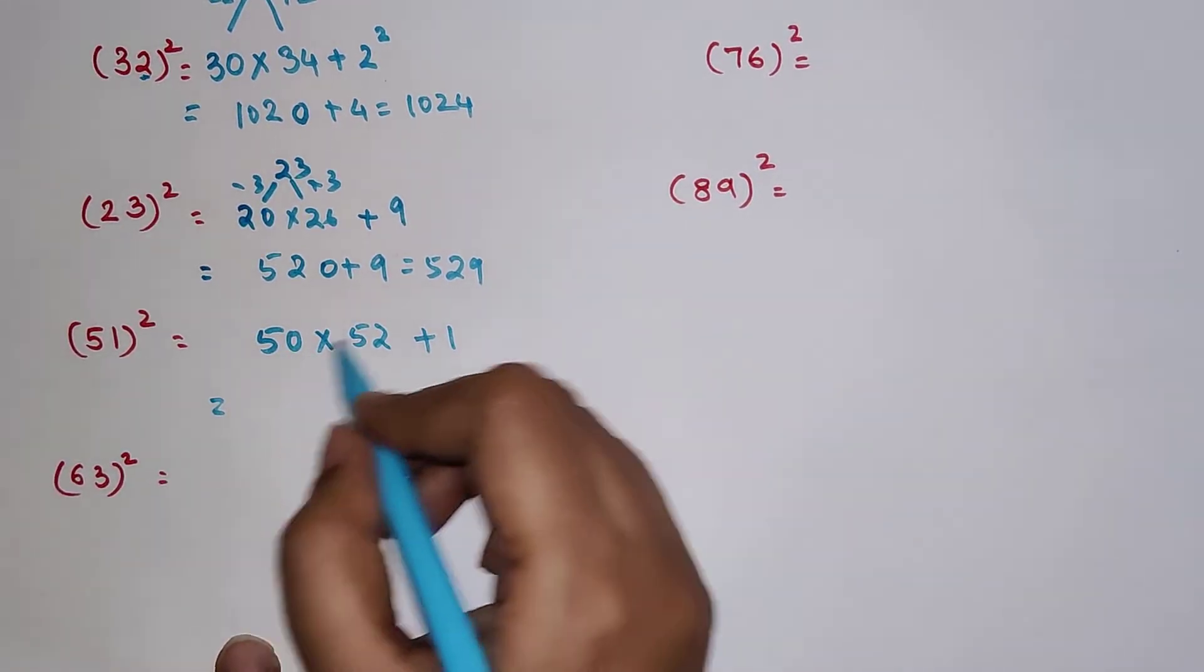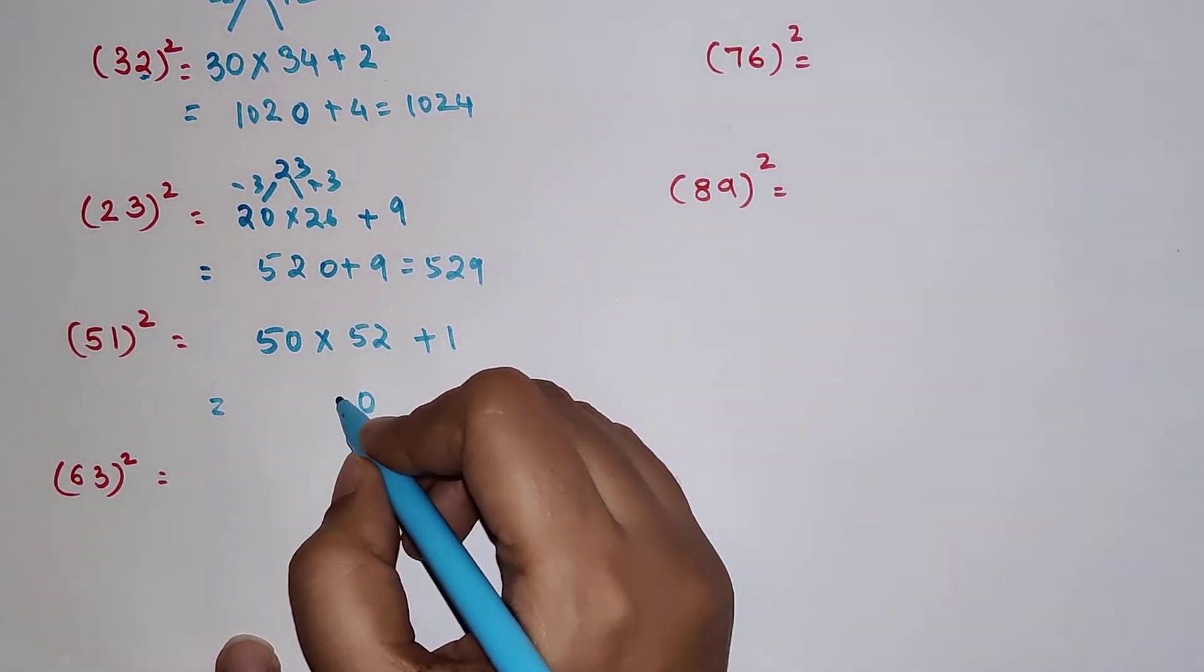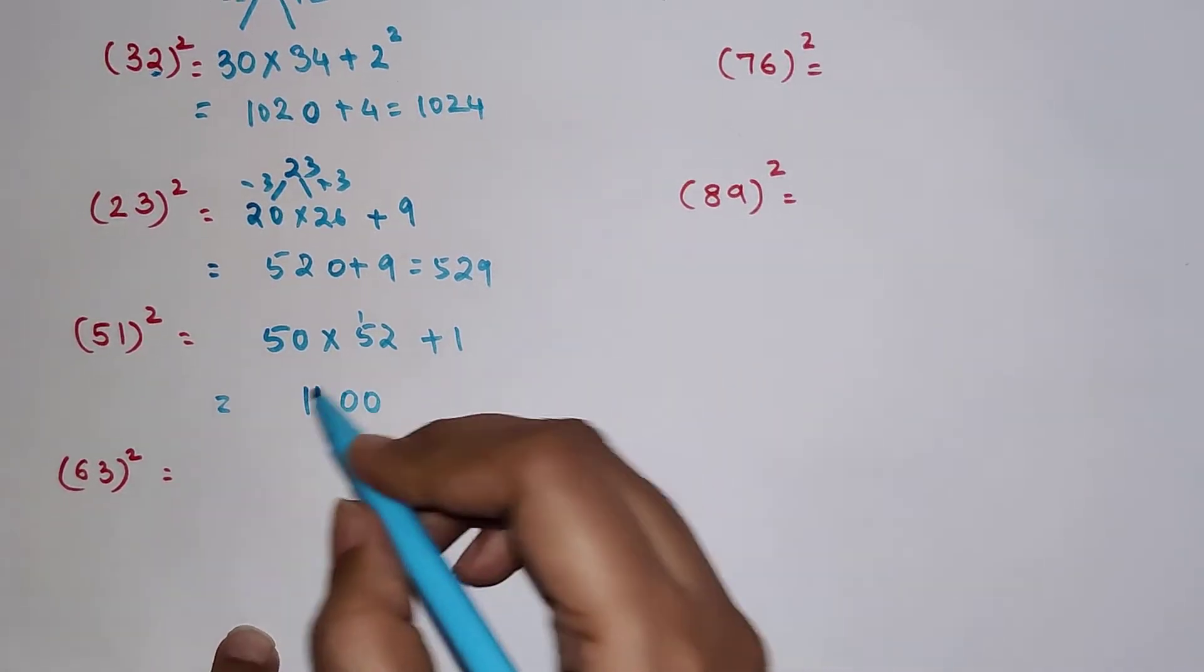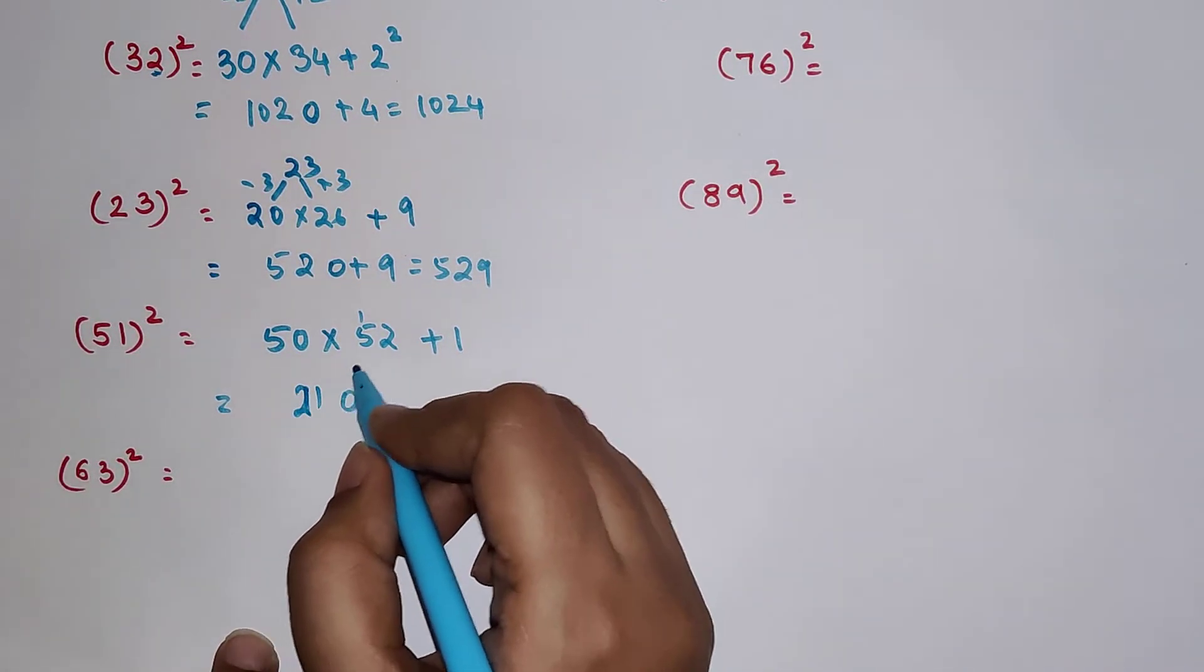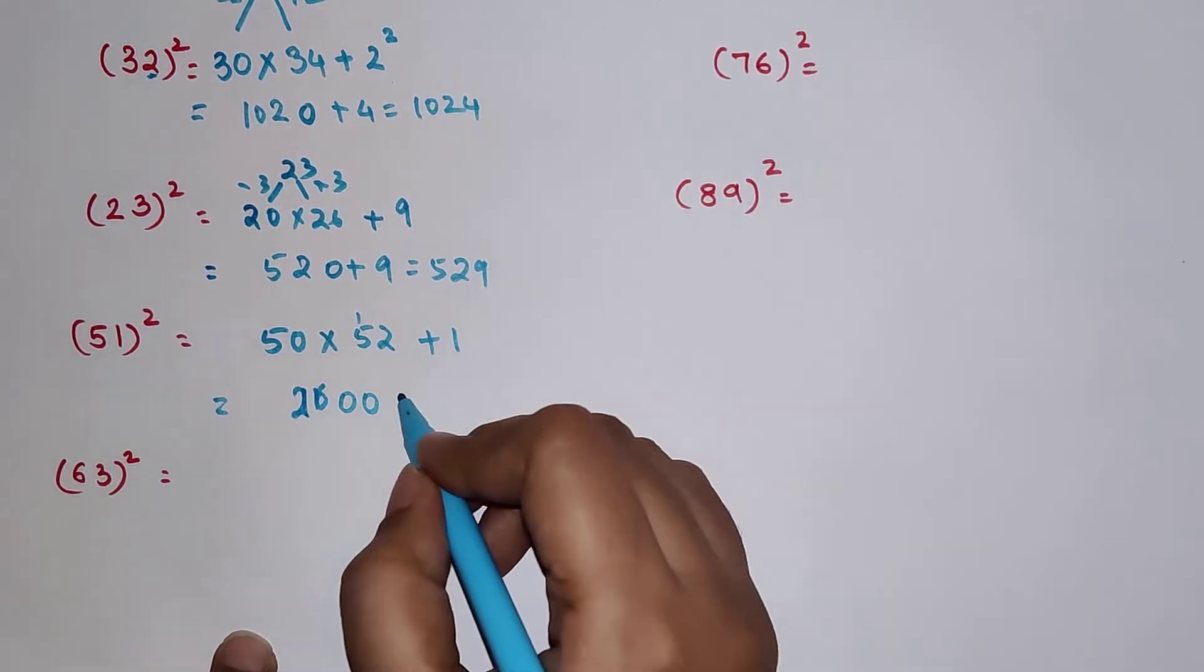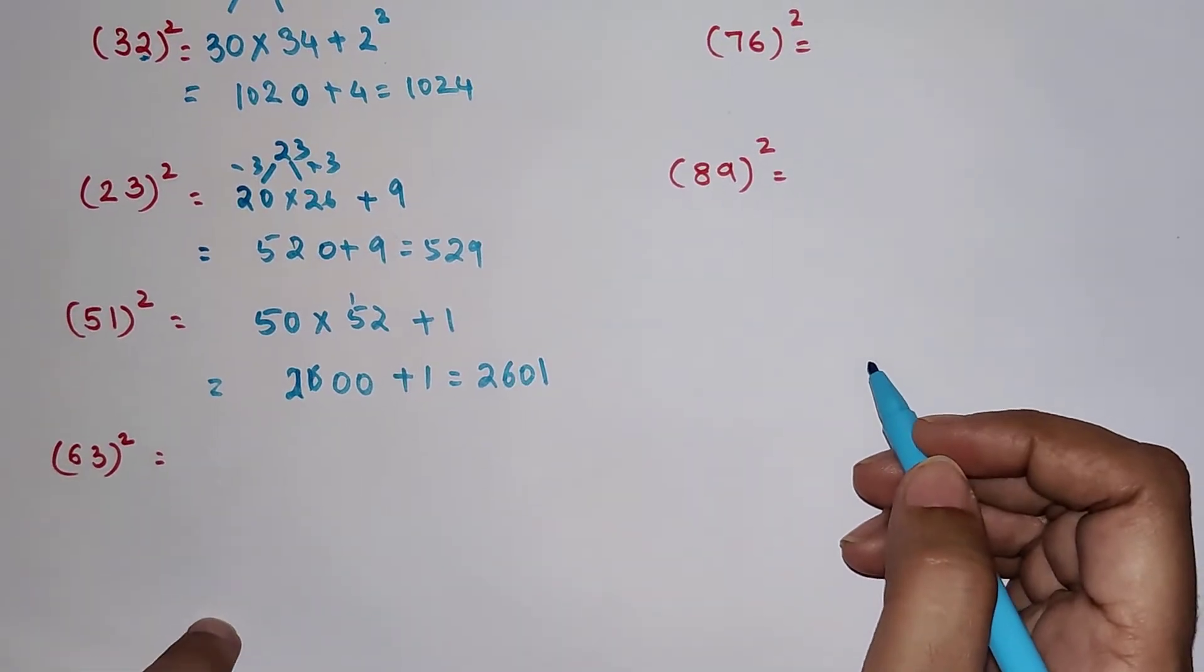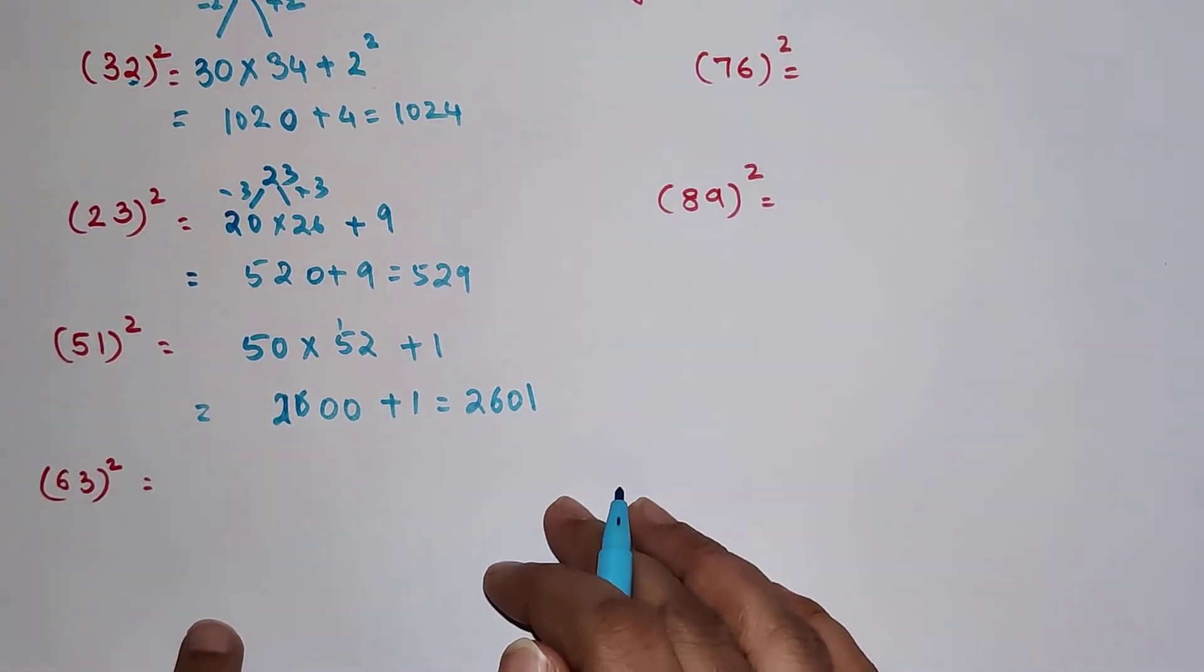Now we have 0, then we have 10, 1 carry and 1, 25 plus 1 gets you 26, so final answer is 2601. I hope you're all getting the hang of it, students.